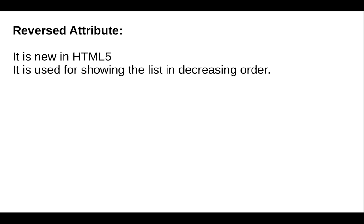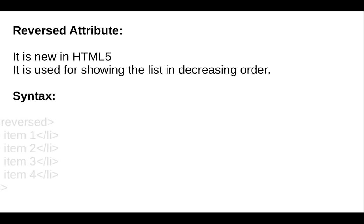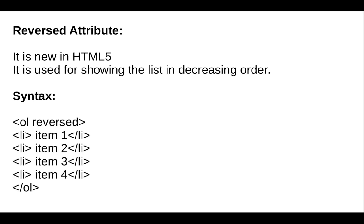The reversed attribute is new in HTML5. It is used for showing the list in decreasing order. The syntax is: open the ol tag, write 'reversed', add one or more items in the list tag, then close the ol tag.